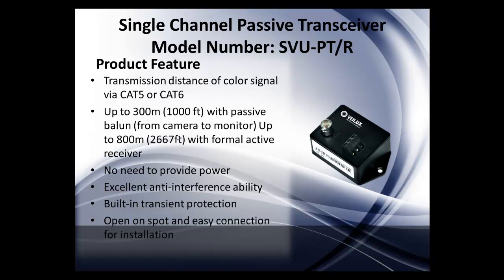If you're using a passive balun and an active balun or active hub, you can go up to 800 meters — 2,667 feet — with active receivers. No need for power on the passive side. Excellent anti-interference ability, built-in transmission protection, and open screw terminals for easy connections and installation.